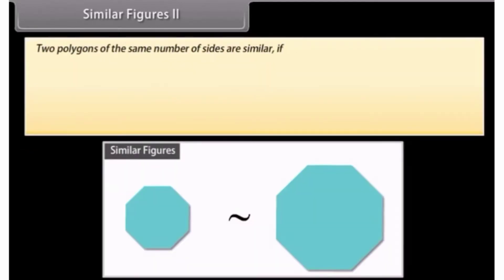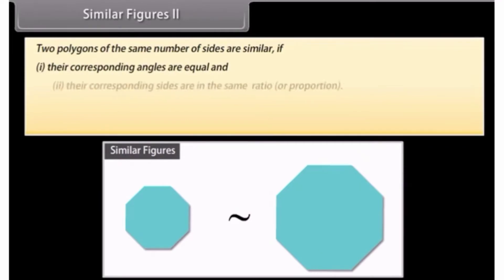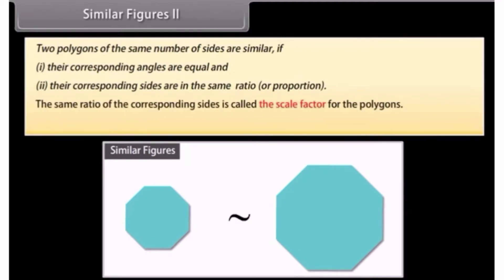Two polygons of the same number of sides are similar if: one, their corresponding angles are equal, and two, their corresponding sides are in the same ratio or proportion. The same ratio of the corresponding sides is called the scale factor for the polygons.